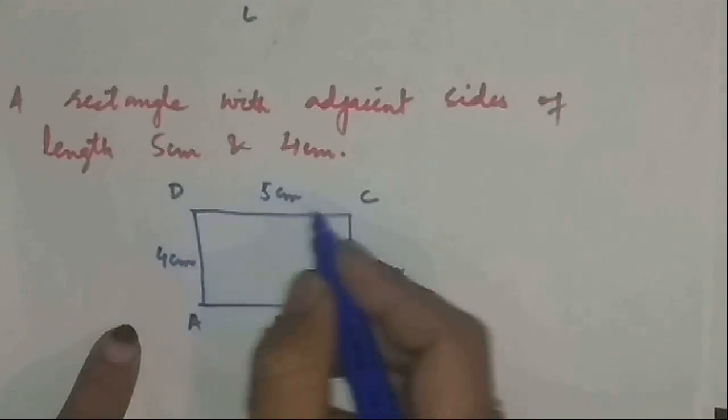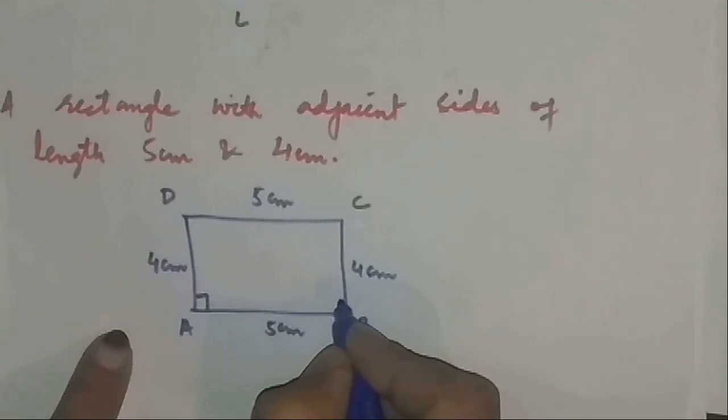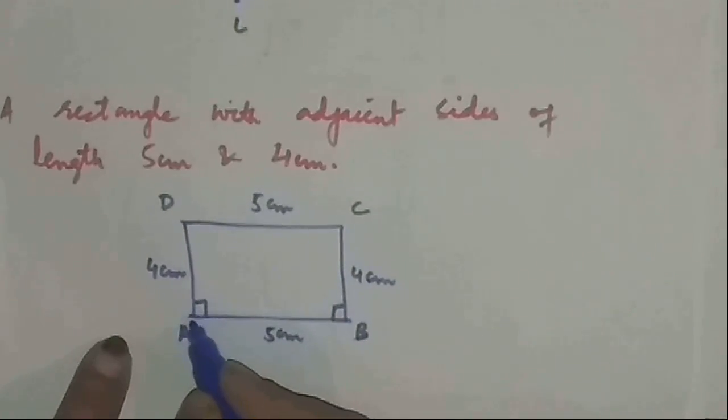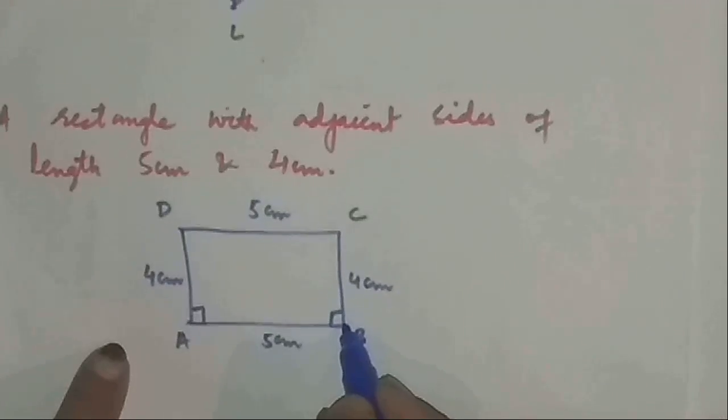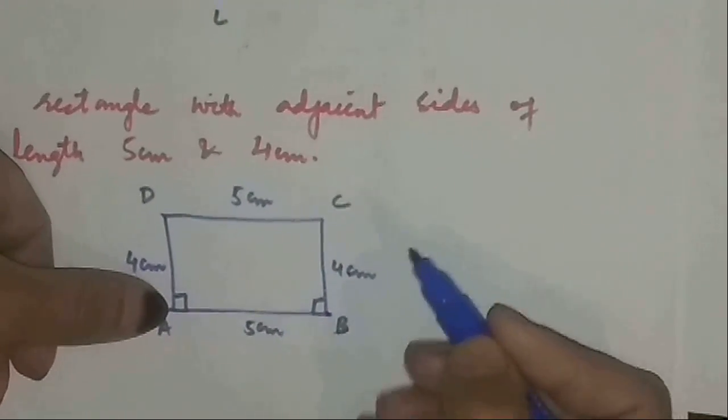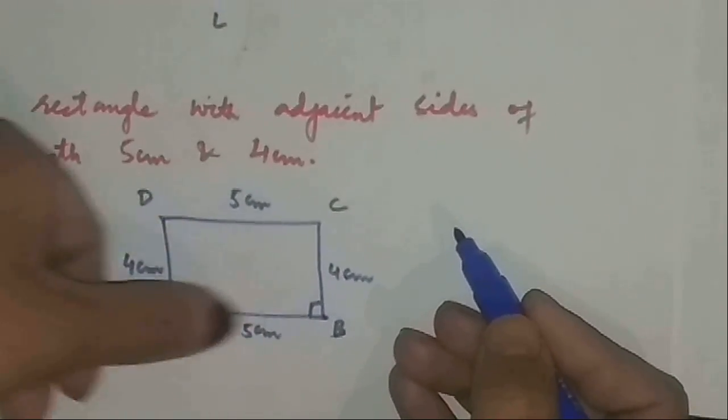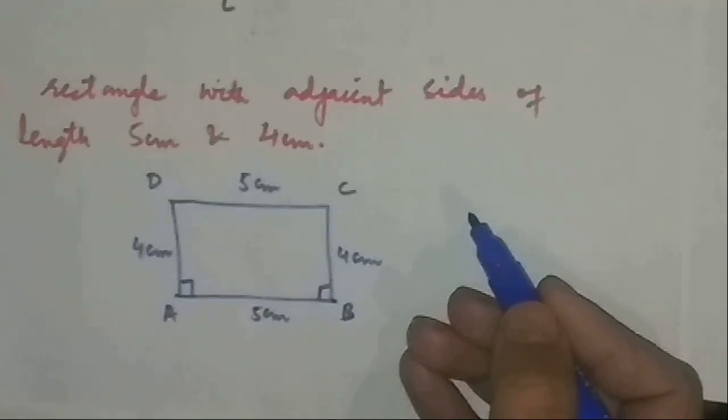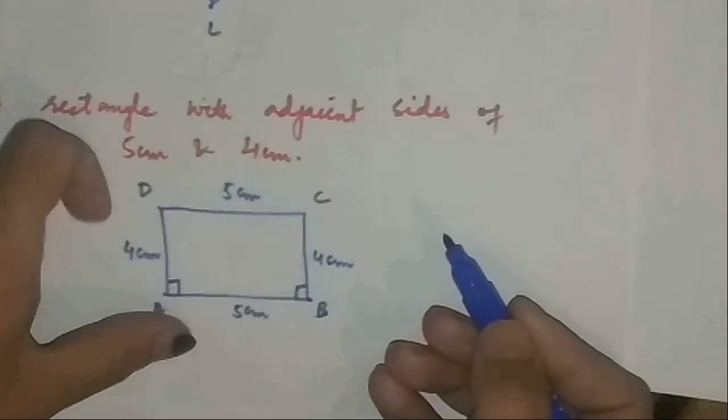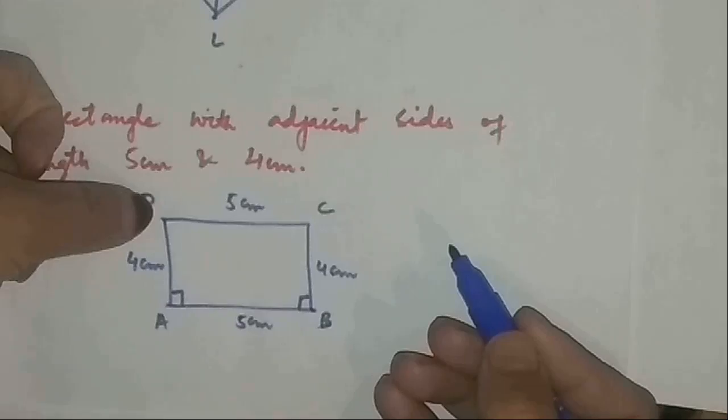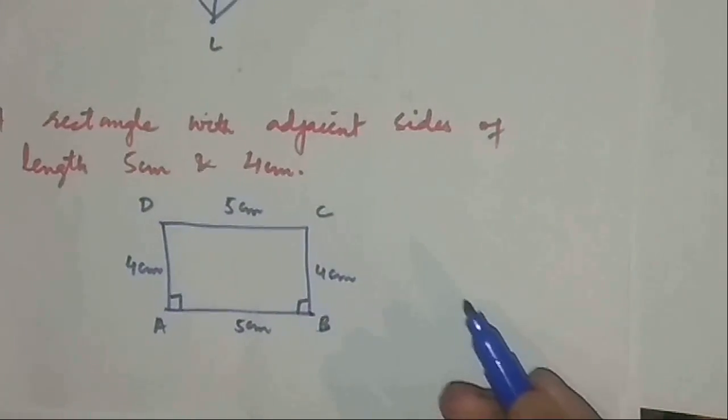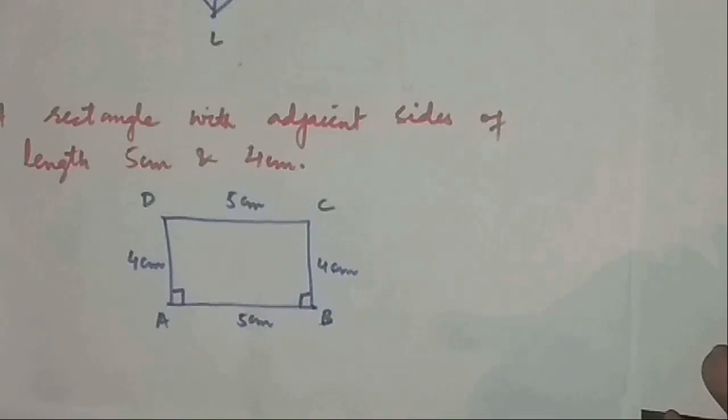So what will you do? You will make the base 5 centimeter, then using the protractor you will make a 90-degree angle from A as well as from B. Then using the compass and radius 4 centimeter, you will cut the rays and you will get the points D and C. Then you will simply join D and C and you will get the required rectangle.